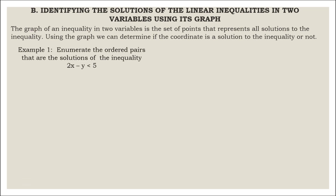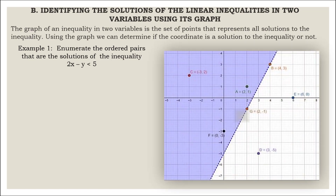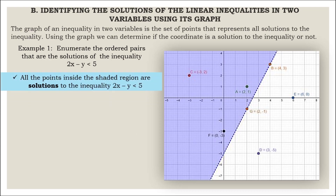Example: Let us enumerate the set of ordered pairs that are solutions of the inequality 2x minus y is less than 5. All the points inside the shaded region are solutions to the inequality. Examples: Point A, Point C, and Point F.